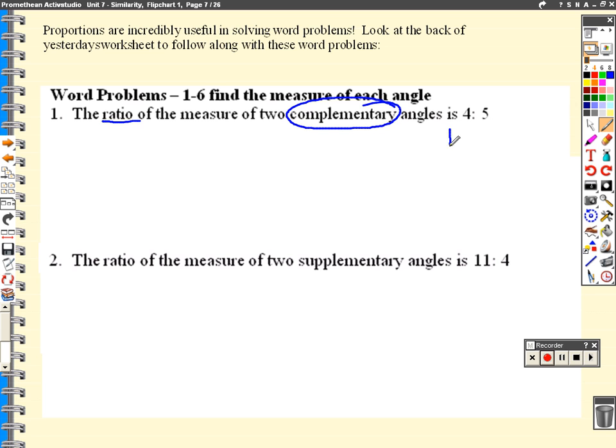Here for number one, it tells us the ratio of the measure of two complementary angles is 4 to 5. Now, what I'm saying is, the ratio 4 to 5 has already been reduced. So that meant there could be some other number here, which I'm going to call x, that we were able to cancel out of both of them to get the ratio 4 to 5. So for the sake of this word problem, I'm going to put the x back in. And I'm going to say, the two angles are 4x and 5x. Angle A and angle B. Now, all I know about angle A and angle B is that they are complementary. And complementary, if you remember back from before, meant that they add up to 90 degrees.